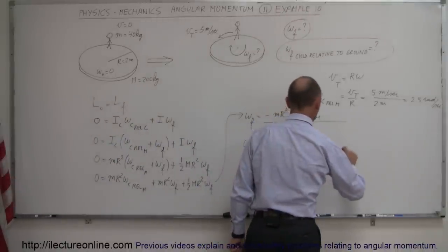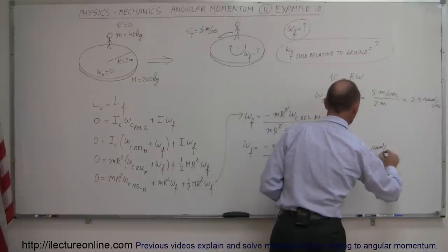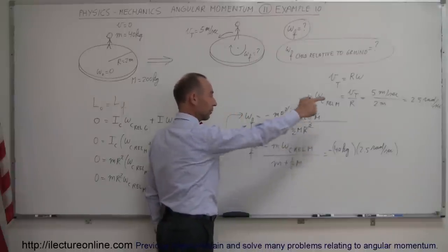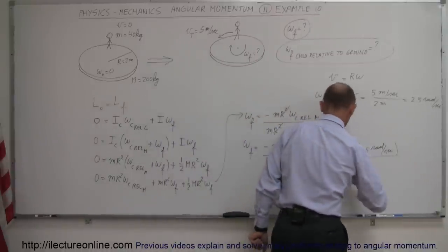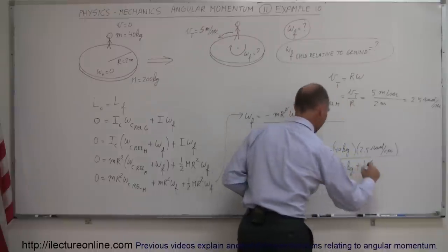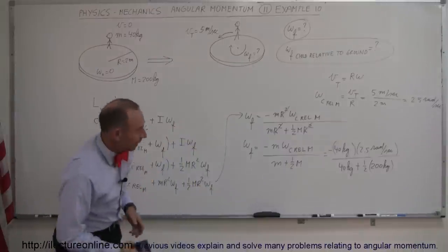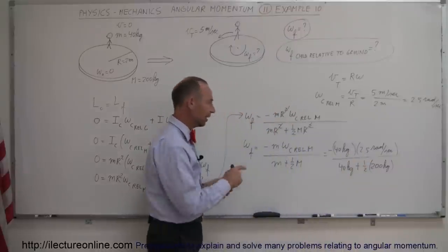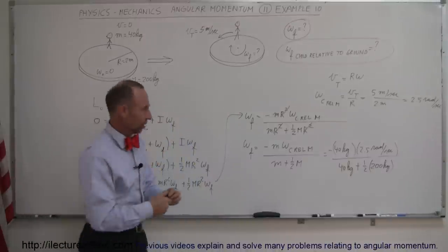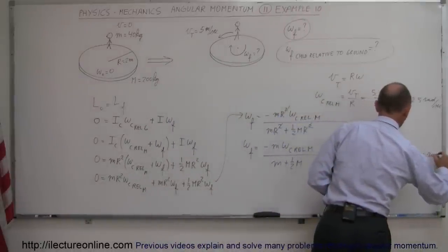Plugging in: ω_final = −40 kg × 2.5 rad/s divided by (40 kg + ½ × 200 kg) = −100 divided by 140, which equals −0.714 radians per second. That is the final angular velocity of the merry-go-round.